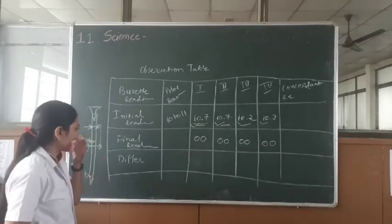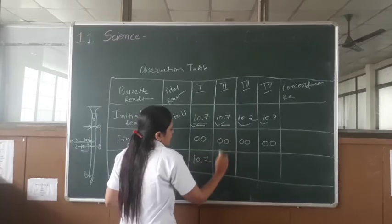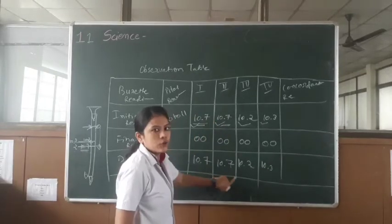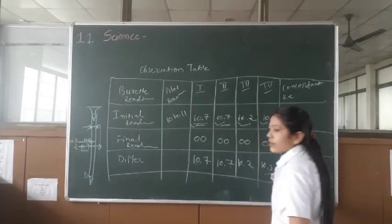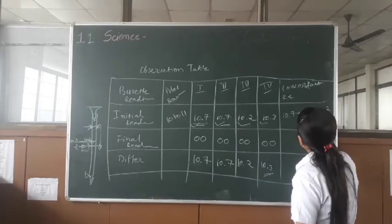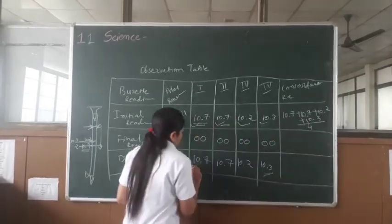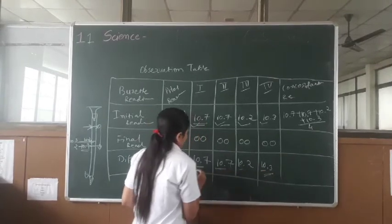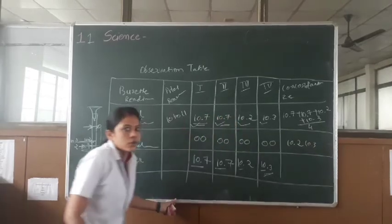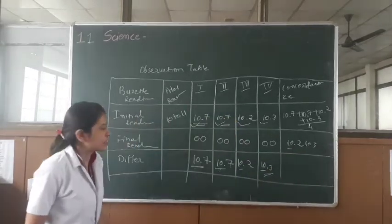Now understood the difference. The difference you already know: initial reading minus final reading. So 10.7 minus 0 = 10.7, then 10.2 and 10.3. So here you have to take 4 readings and divide by 4. This is our 4 readings: 10.7 + 10.7 + 10.2 + 10.3, and we have 4 readings, so divide by 4. Our answer will be 10.2 or 10.3, around that range. Remember, if our reading is 10-point-something, the answer will also be 10 or 11. Clear, students?